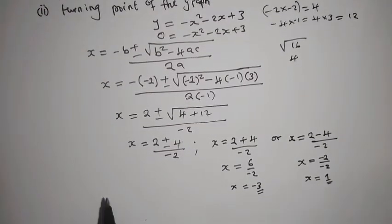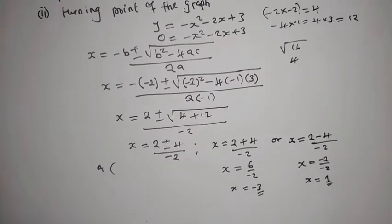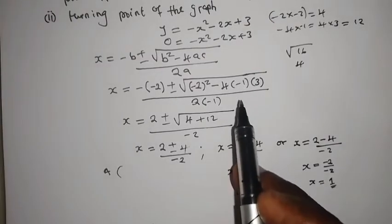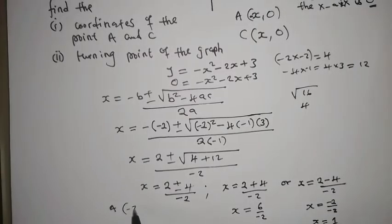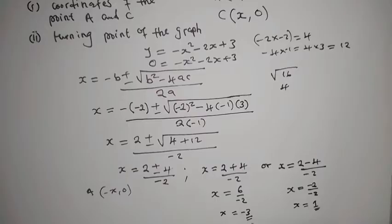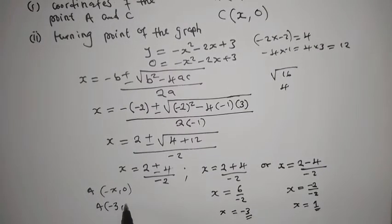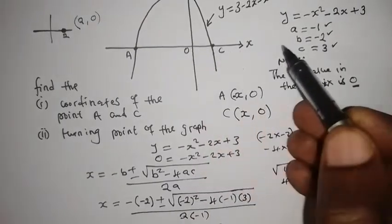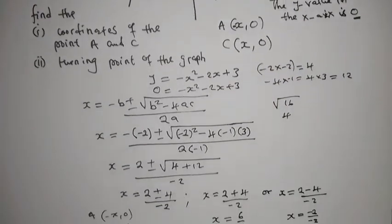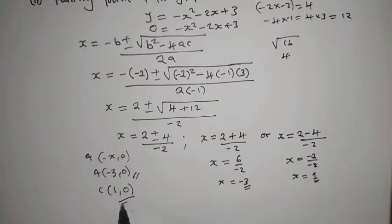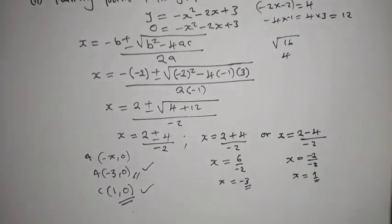We said that A is on the left side of the axis, so its X value is negative. That gives us A equals negative 3 comma 0. For C, it is on the right side of the axis so its X value is positive, giving C equals 1 comma 0. These are the coordinates of A and C.